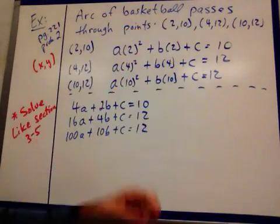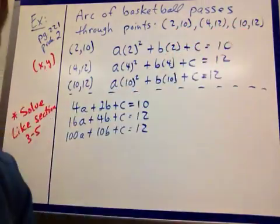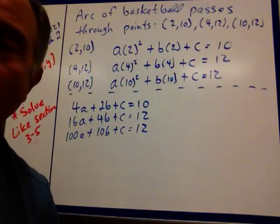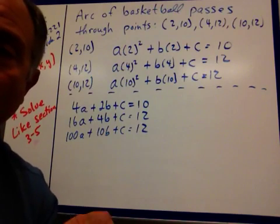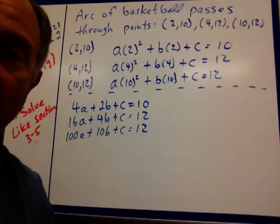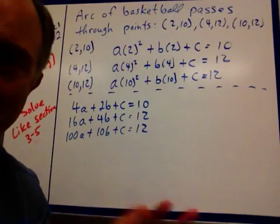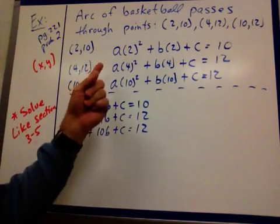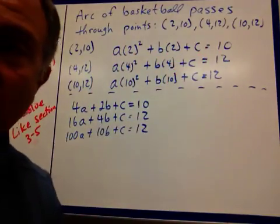Say you have an arc of a basketball that passes through the points 2,10, 4,12, and 10,12. Just like when we're solving y equals mx plus b where you find the slope and then you plugged in the xy and the m and you found b, then you rewrote your equation. Well, it's that mindset. But you're doing it with your y equals ax squared plus bx plus c, your standard form.